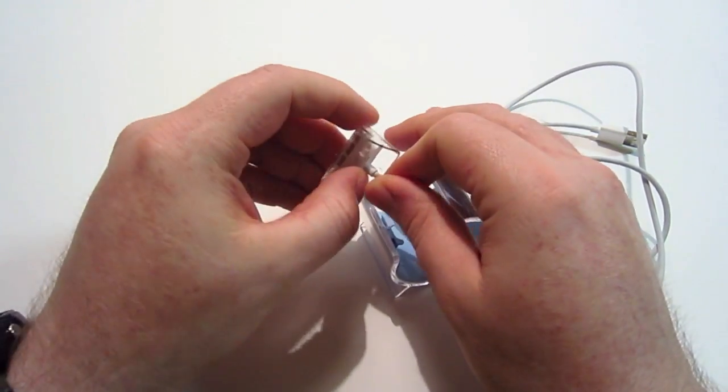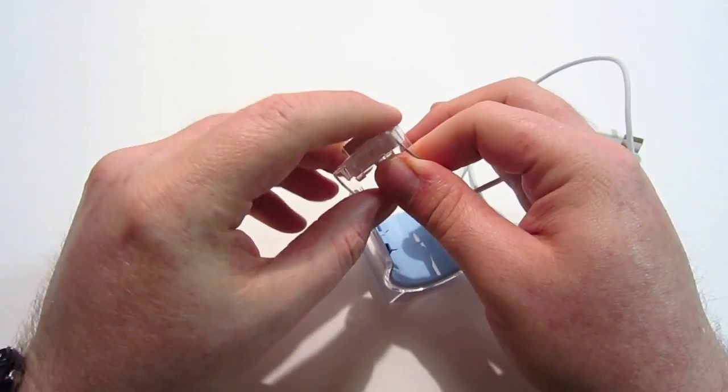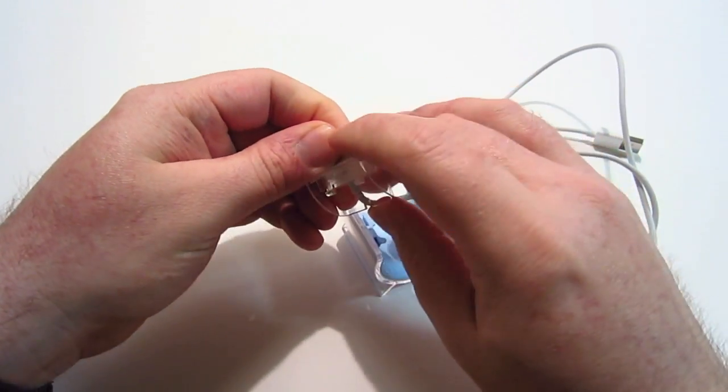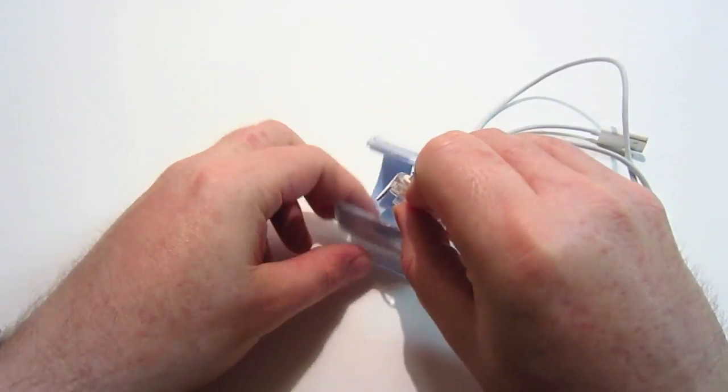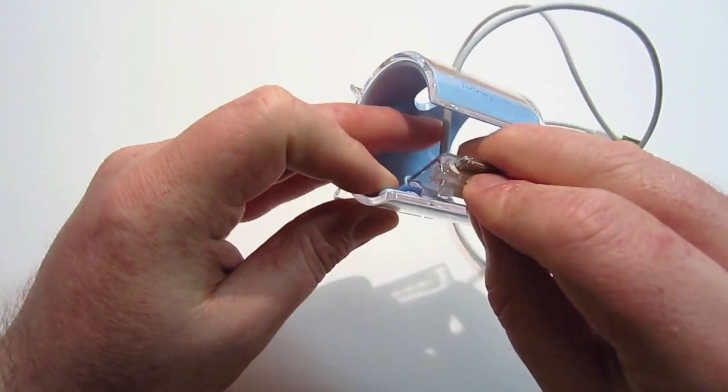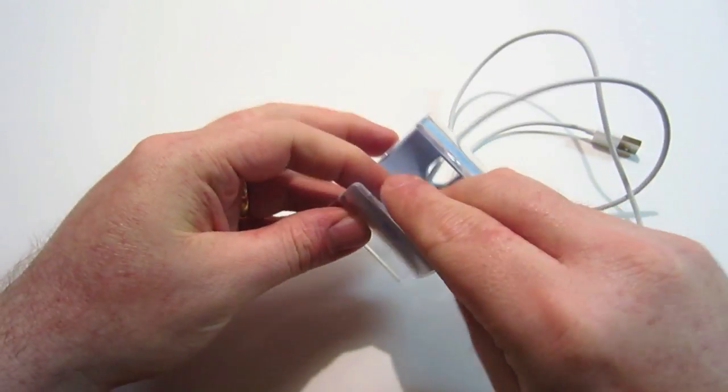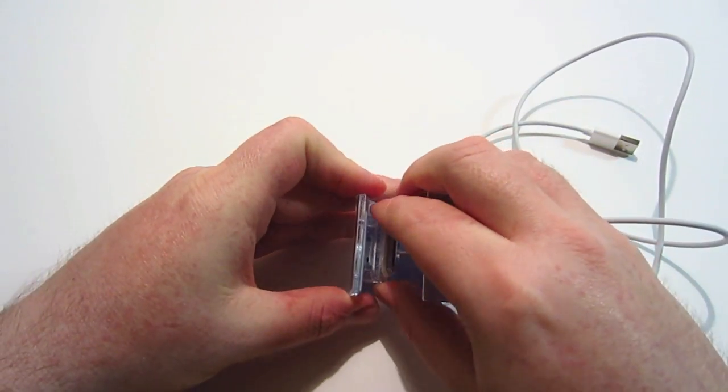You feed your dock connector through there and then you run it right through the thing. It's got a little thing there, and then you're going to want to lock this back into place. There you go, it's locked into place.